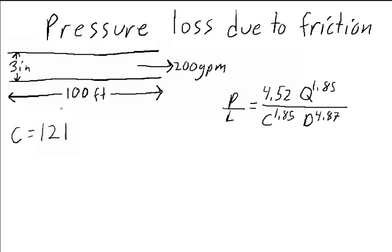So let's say we have some type of piping, 3 inch in diameter, 100 feet long, and flowing 200 gallons per minute of water.